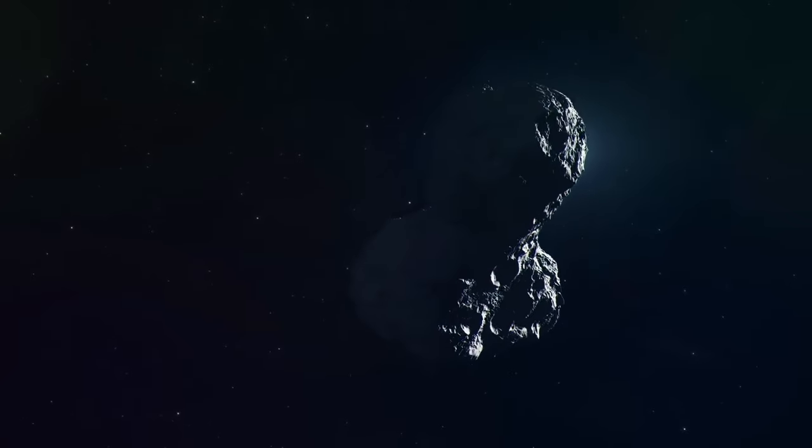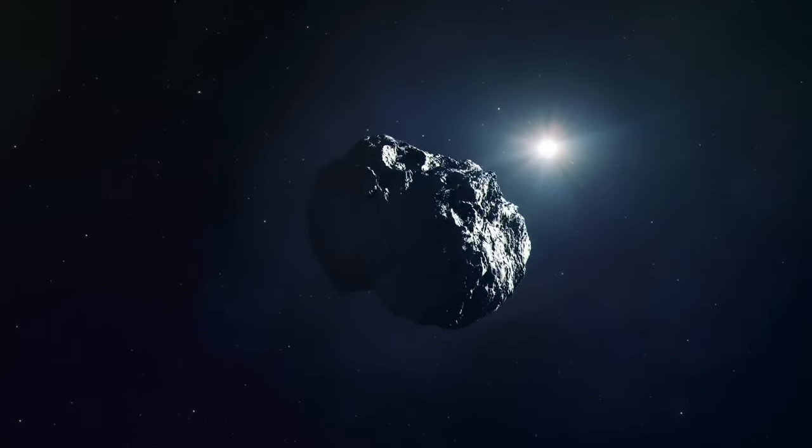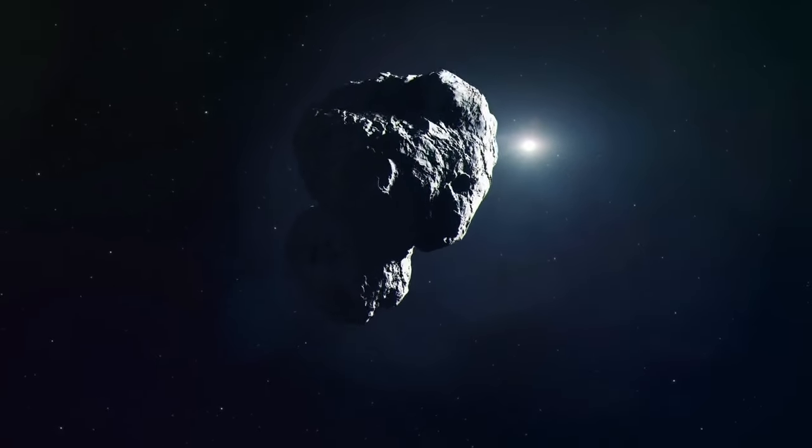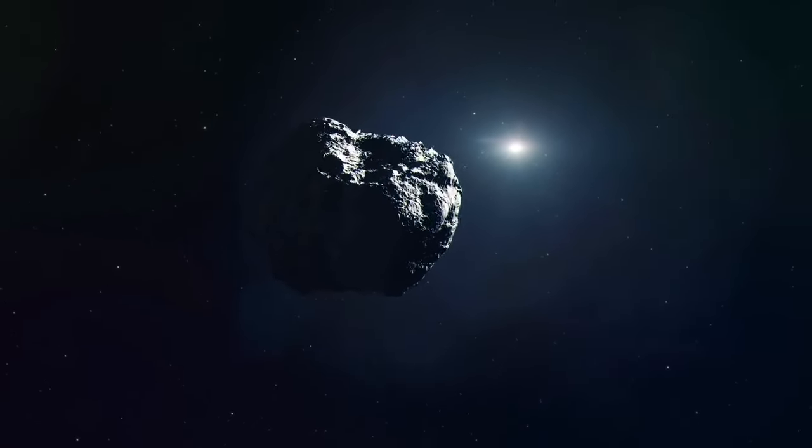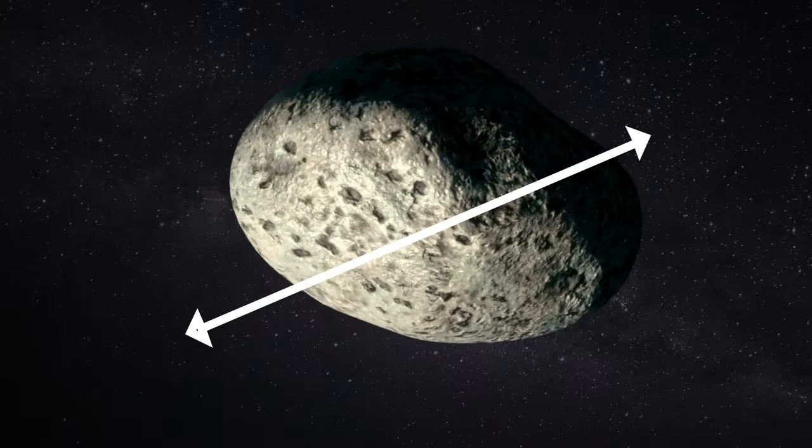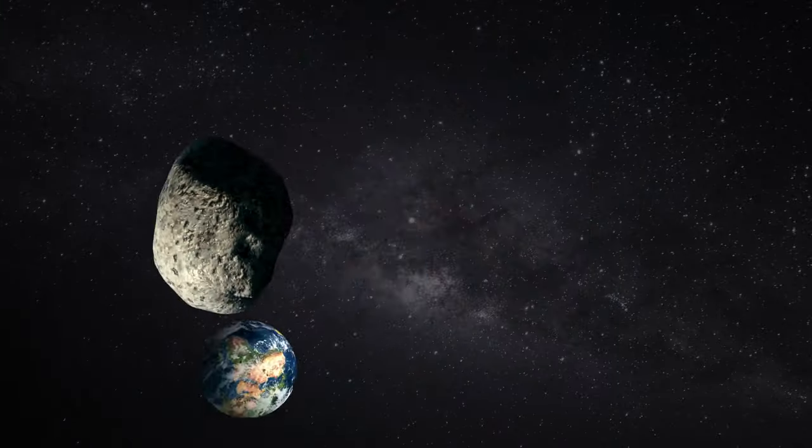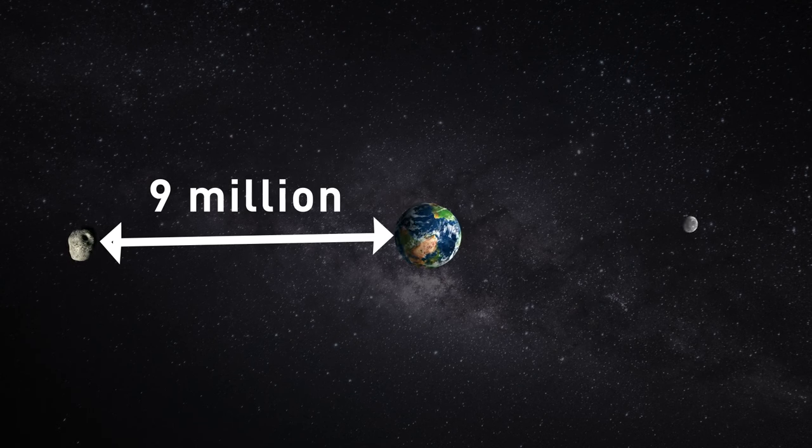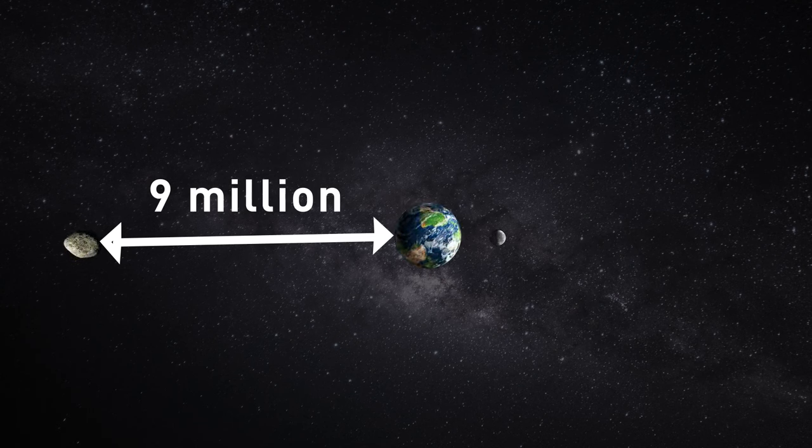You've probably already realized that 2023 FW-13 isn't the kind of Moon where we could send a mission. It's way smaller and farther away than our natural satellite. The newly found space object is a mere 50 feet across and is floating 9 million miles away. And that's when it's the closest to Earth. This distance is around 35 times as great as that between our planet and the Moon. On the other hand, cosmically speaking, it's just next door.